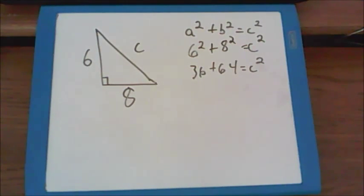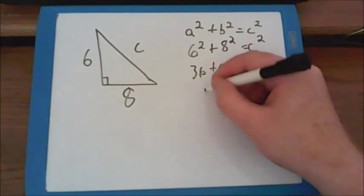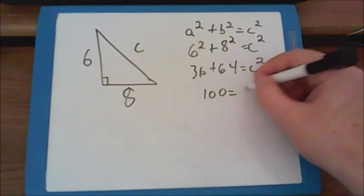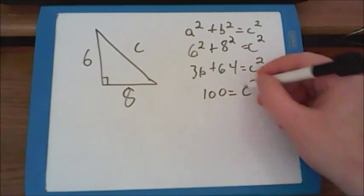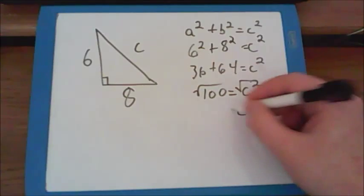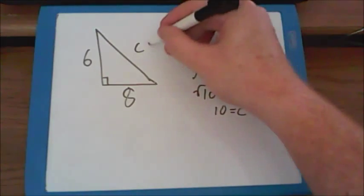Now that I do the addition, thirty-six plus sixty-four, I come up with a hundred. And one hundred equals c squared. But like last time, I have to take the square root to find out what c is worth. And c is worth ten units in this question.